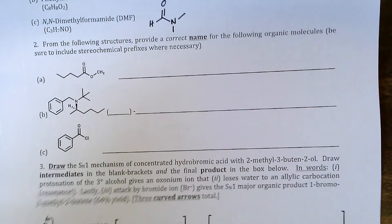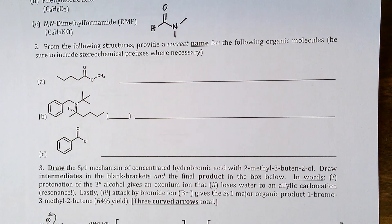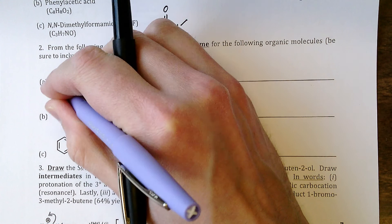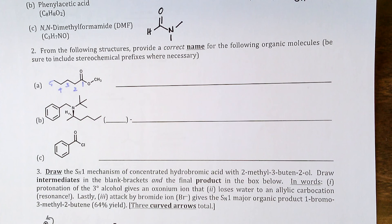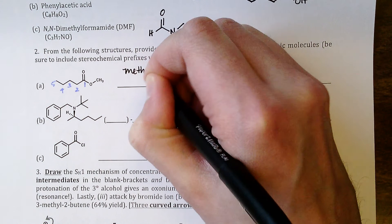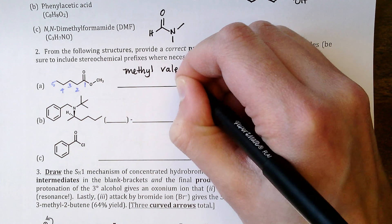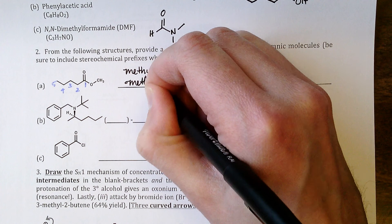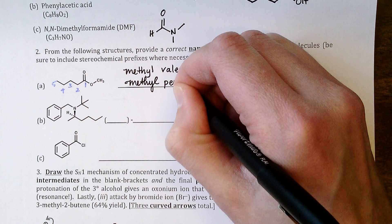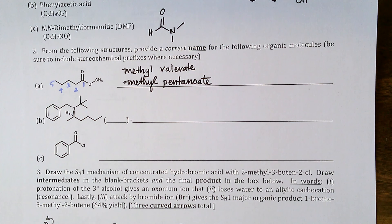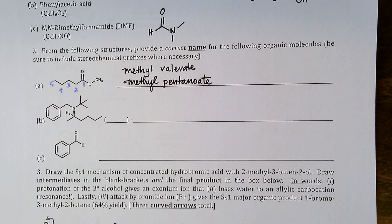Version A structure to name: we have a methyl ester of valeric acid or pentanoic acid, so this has the common name methyl valerate, or we could say methyl pentanoate.